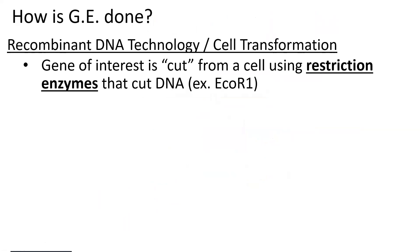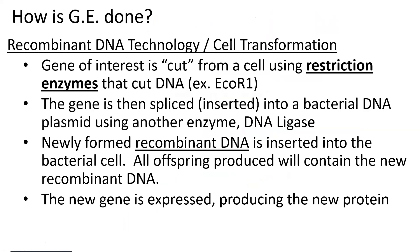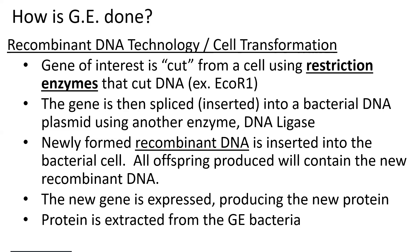So to summarize genetic engineering: we use recombinant DNA technology, using bacterial cells to transform their DNA. We need restriction enzymes to splice the gene. That recombinant DNA is inserted into a bacterial cell, which now has the new gene, expresses it, and produces the new protein. We can take a gene from a fish and put it into the DNA of a tomato — and that tomato will have the gene for whatever that fish trait was, like resistance to frost or cold temperatures. We do this via recombinant DNA technology and gene splicing.